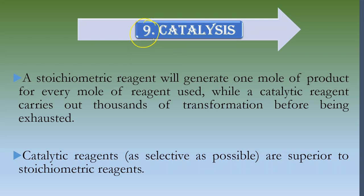Principle 9 says that a stoichiometric reagent will generate one mole of product for every one mole of reagent used, while a catalytic reagent carries out thousands of transformations before being exhausted. Catalytic reagents are superior to stoichiometric reagents — as selective as possible. Simply use a catalyst wherever it's possible. That is what Principle 9 says.